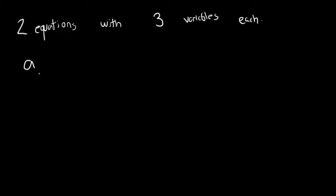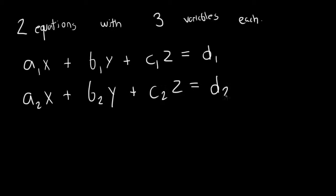What would happen if we were given two equations? And these two equations will have three variables each. For instance, we would have A1X, X being one of those variables. We'd have B1Y, Y is one of those variables. And then we would have C1Z, Z is another one of those variables. And that would be equal to D1. And then we would have A2X plus B2Y plus C2Z equals D2.